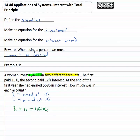We're talking about L and H as the amounts at the lower and higher interest rates, not the rates themselves. Then we need another equation showing she earns five hundred eighty-six dollars in interest. The lower one earns point twelve times L, plus the higher one earns point thirteen times H, equals five hundred eighty-six dollars.